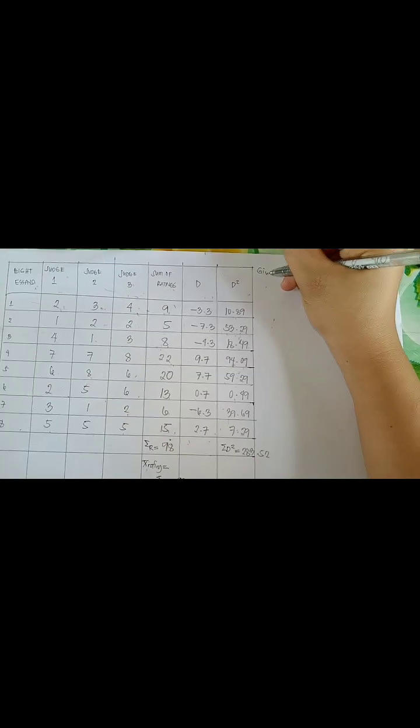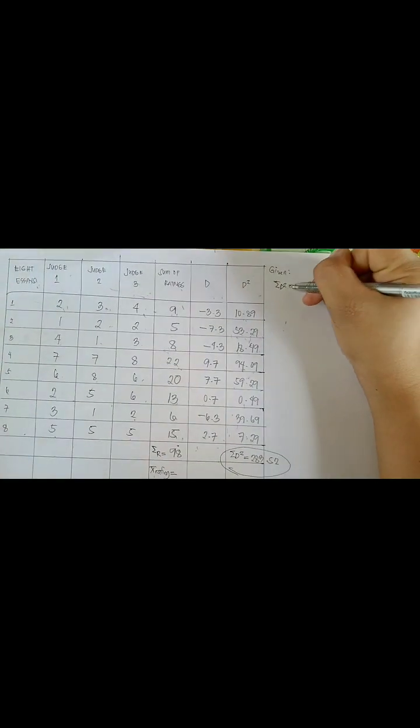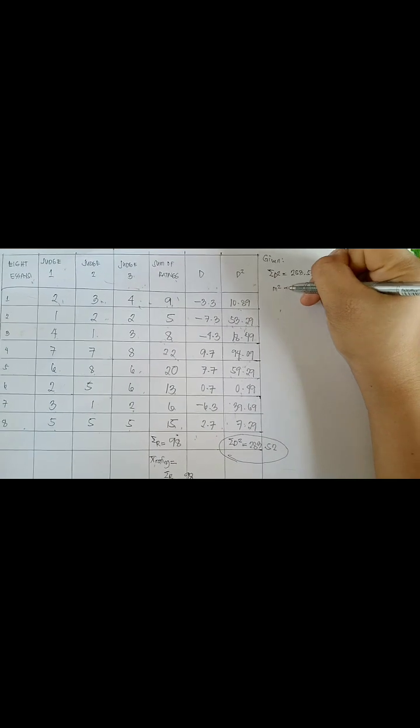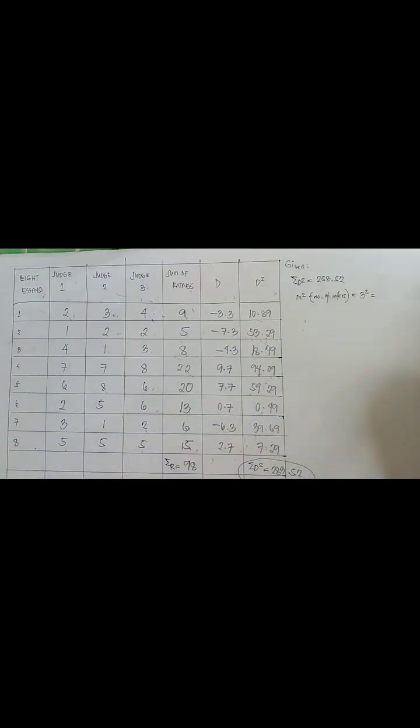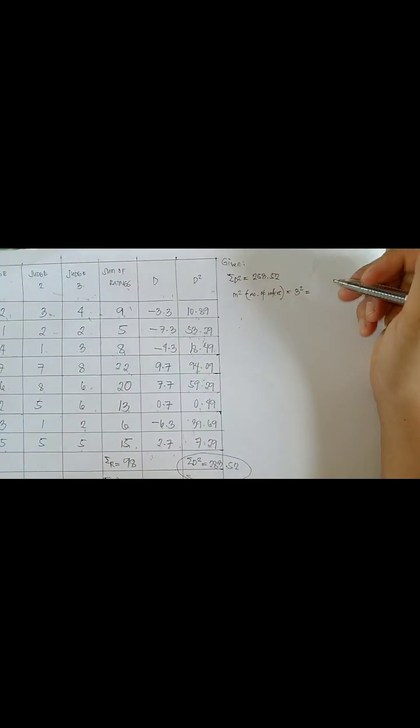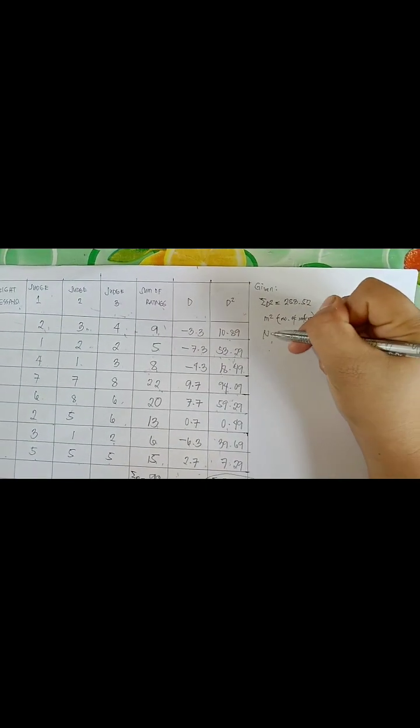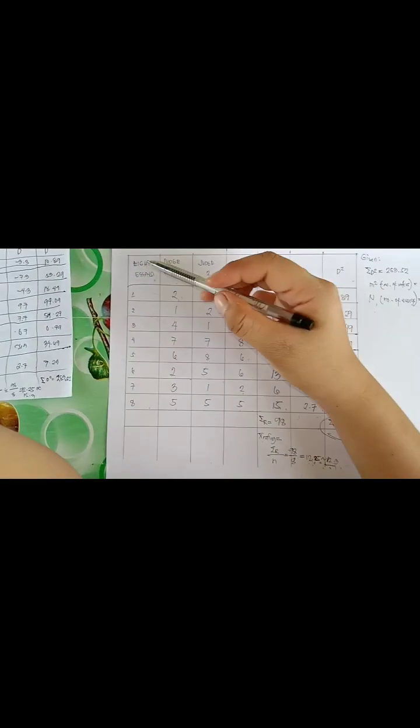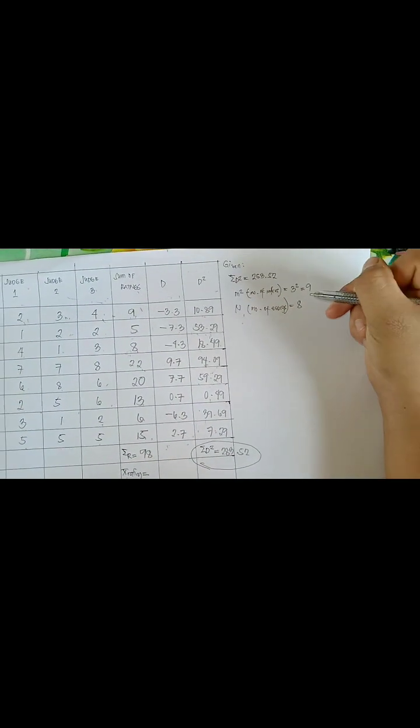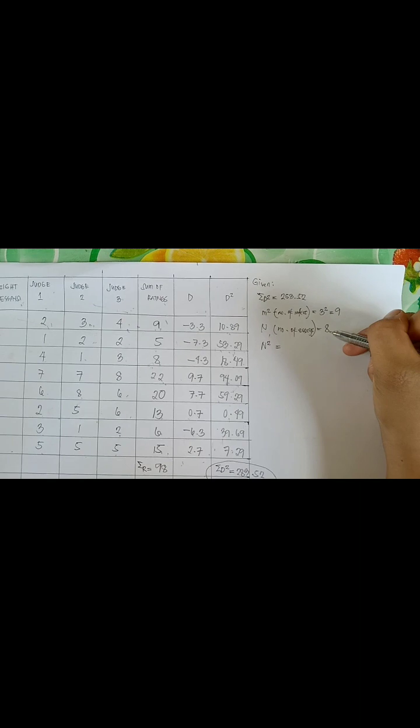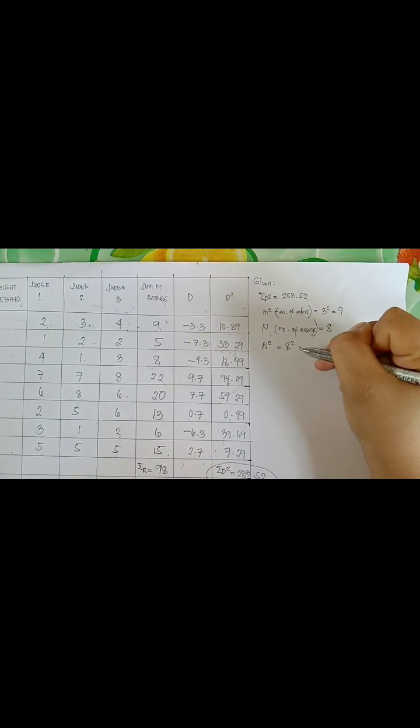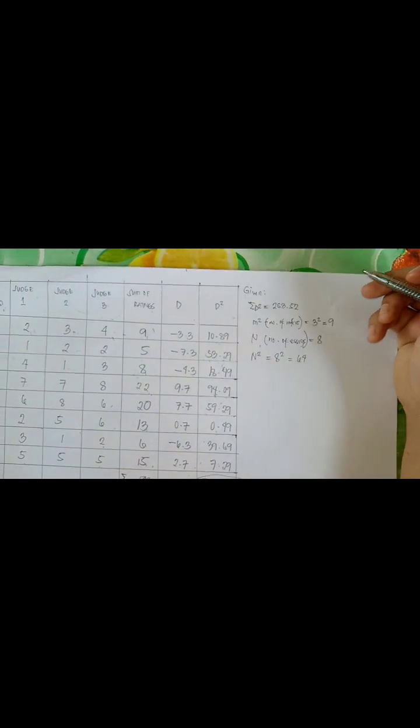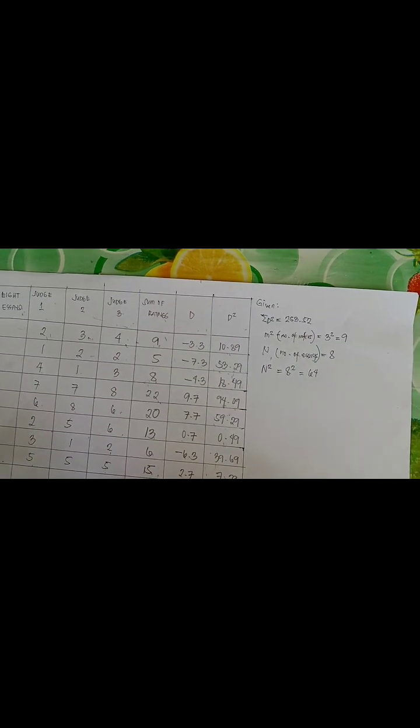Let us list all the given. Here it is. Summation of D squared is equal to 253.52. And then the M squared. The M squared is the number of raters. We have three number of raters. Three squared is equal to nine. And then the N, or the number of essays. We have eight essays. N is equal to eight. And then N squared. The N is eight. And then we have to gather also the N squared. So N squared is equal to eight squared. And eight squared is equal to 64. In order to proceed with the solution, of course we have the Kendall's W formula.